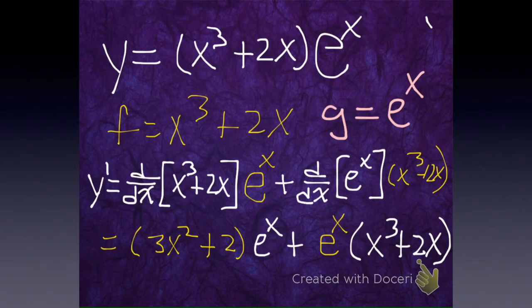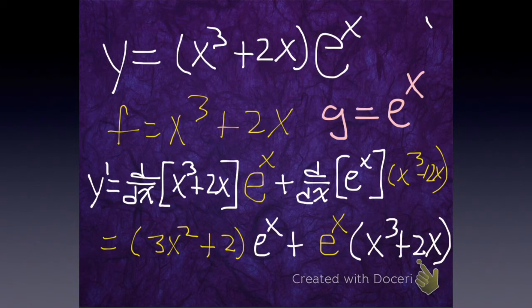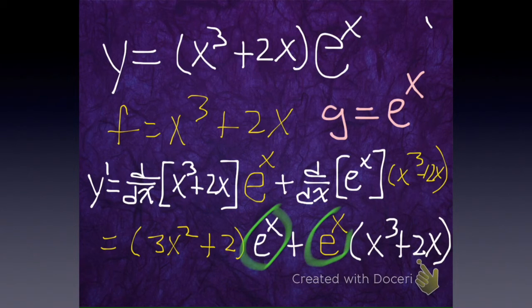Now let's do some fancy factoring. I see that I have things in common. Some of you are like, couldn't I have distributed in that e to the x first and then taken the derivative term by term? Yeah, absolutely, that would have worked — it probably would have even been quicker. But we're in the product rule section, so we should probably try using the product rule. I see my e to the x there and my e to the x there, and I'm going to pull my e to the x out.